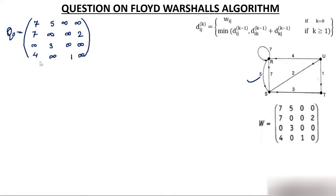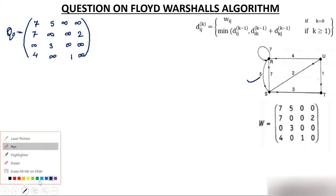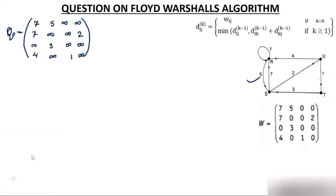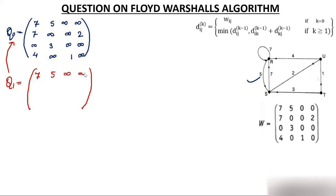Q0 matrix is not part of the four matrices Q1, Q2, Q3, Q4 — you have to make those four because there are four vertices. For making Q1 matrix, you select the first row and first column of the Q0 matrix. First row is: 7, 5, infinity, infinity. First column is: 7, 7, infinity, 4. You select them, and to calculate each element you put a perpendicular on those two selected items.